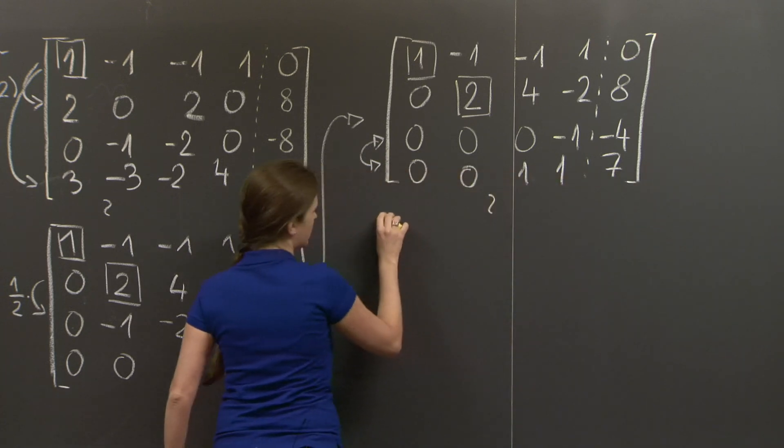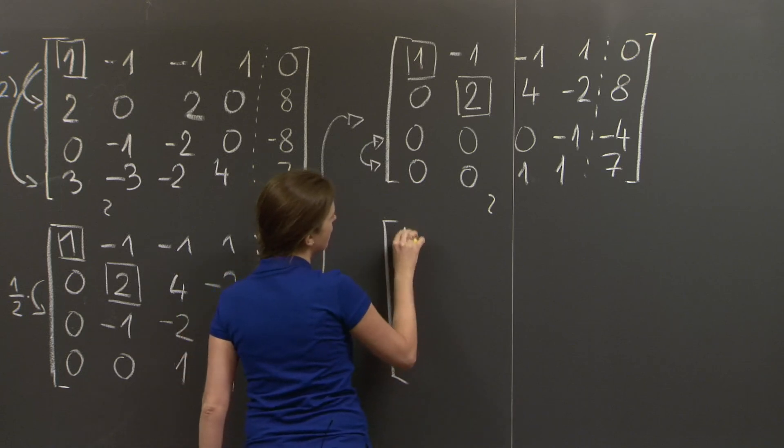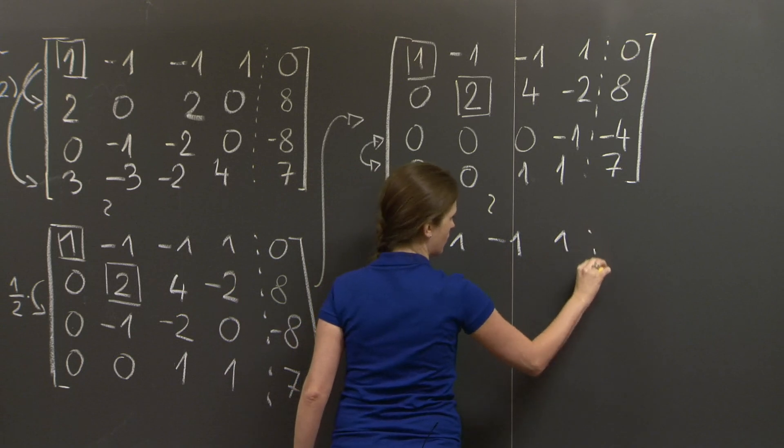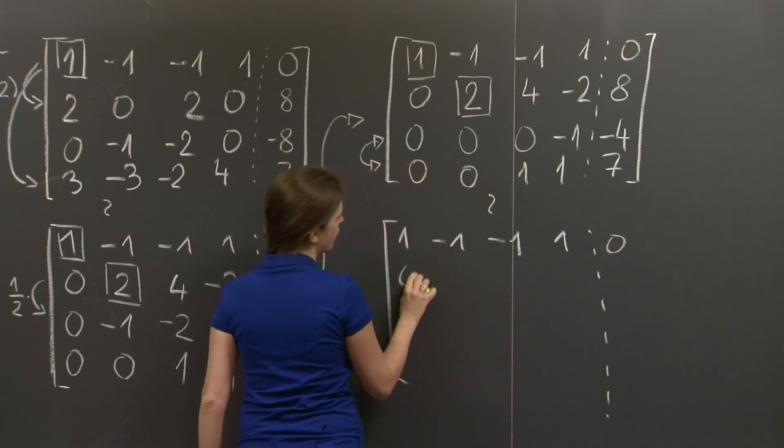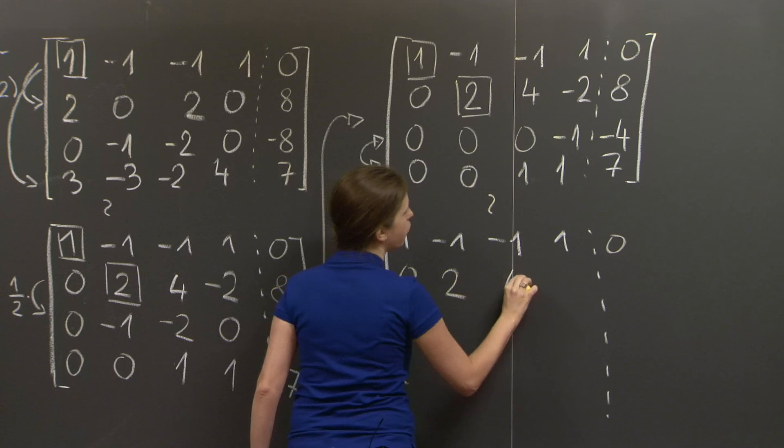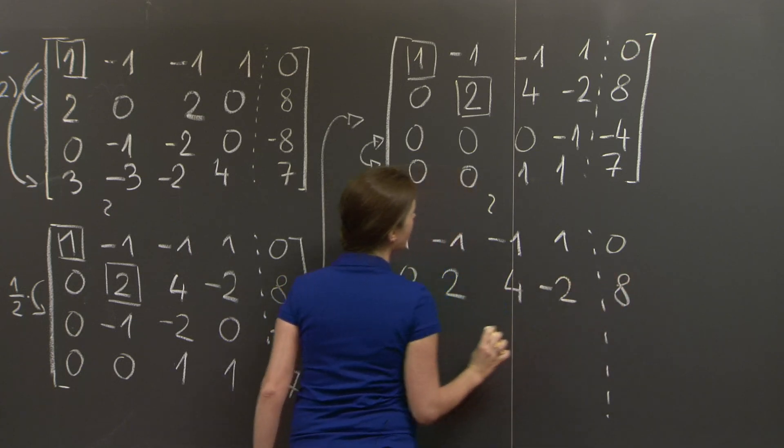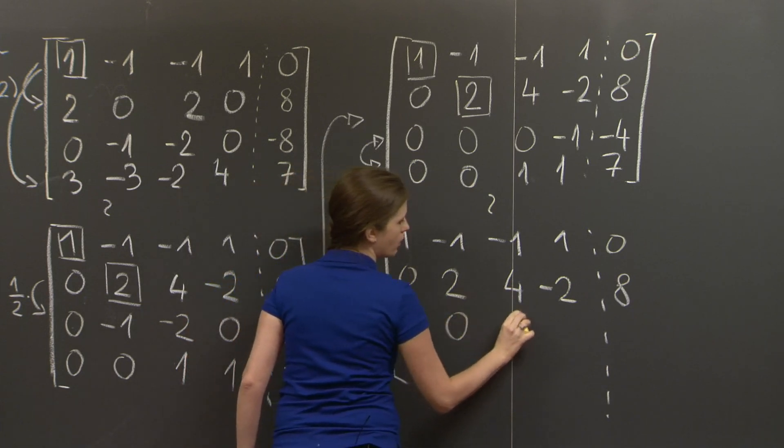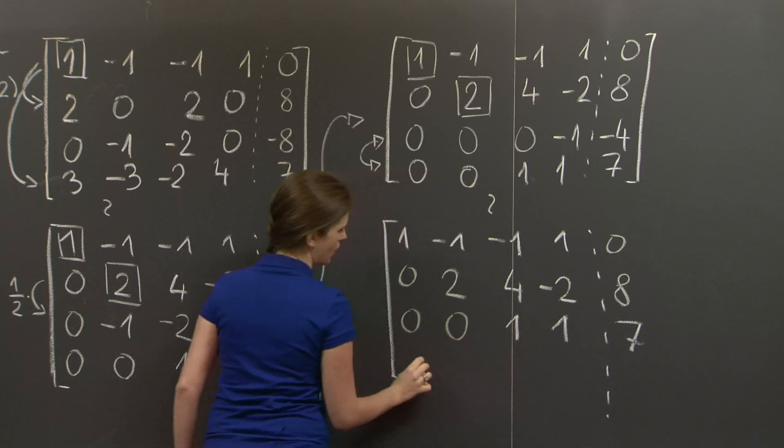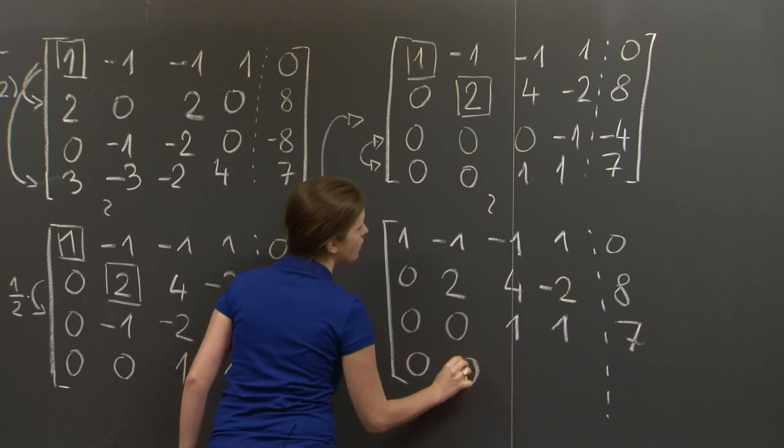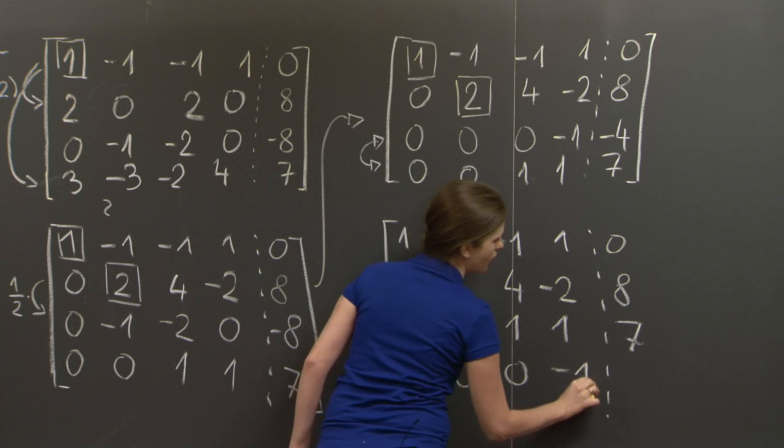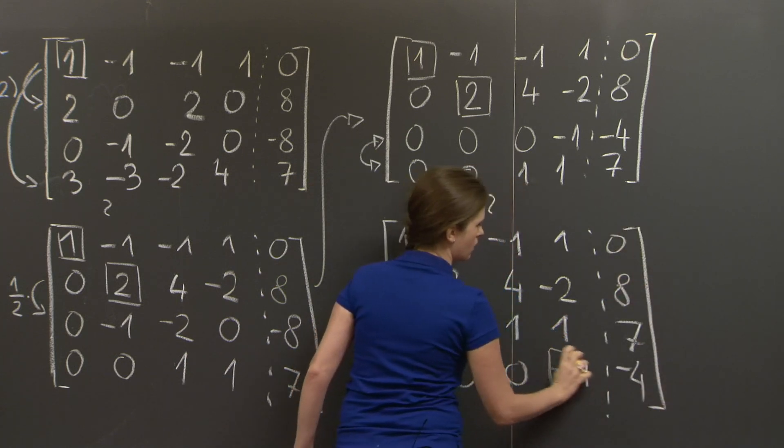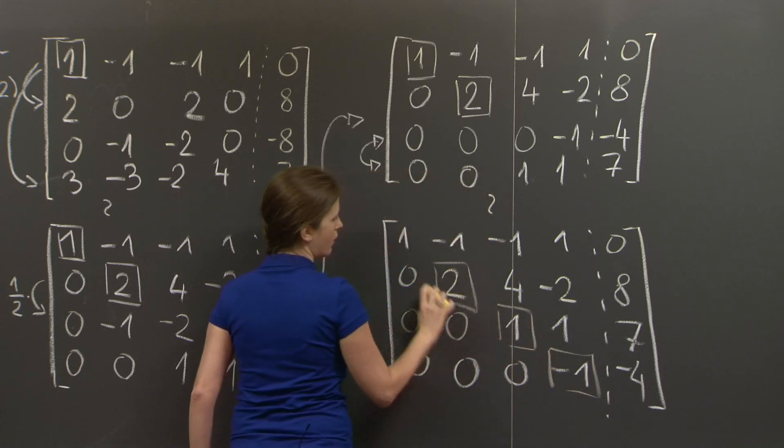There is a very simple row operation, which consists just of switching the third and the fourth row. It certainly doesn't change the solution of the system. So let's do that, and let's get the next matrix, which is 1, minus 1, minus 1, 1, 0. 0, 2, 4, minus 2, 8. Then we put the fourth row here: 0, 0, 1, 1, 7. And we put the third row here: 0, 0, 0, minus 1, minus 4.